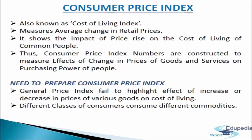In the table, the major groups are food, fuel and light, housing, clothing, bedding and footwear, miscellaneous group, and general. Thus, consumer price index numbers are constructed to measure the effects of changes in prices of goods and services on real income, i.e., the purchasing power of people during a given period of time relative to the base year. Consumer price index reflects the effect of increase or decrease in prices on the cost of living of different classes of people in a society.